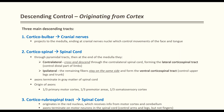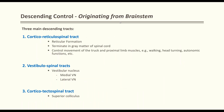The corticorubrospinal tract originates from the red nucleus, receiving input from both the motor cortex and cerebellum. These axons terminate in motor neurons of the spinal cord and control arm and leg movement, but not the fingers. The reticulospinal tract forms the reticular formation, terminates in the gray matter of the spinal cord, and controls trunk and proximal limb muscles, walking, head turning, and autonomic function. The vestibulospinal tract originates from vestibular nuclei; the tectospinal tract originates from the superior colliculus.